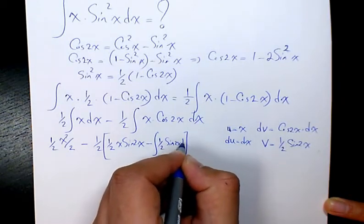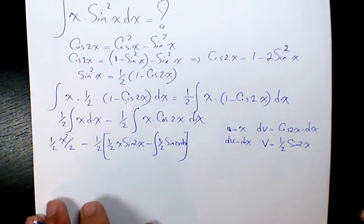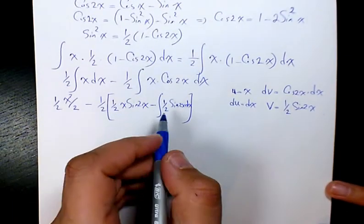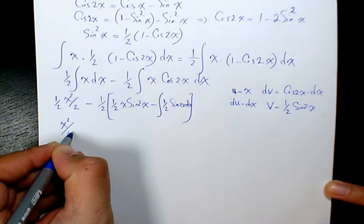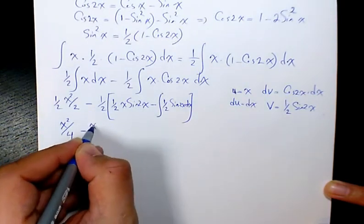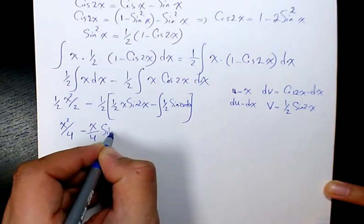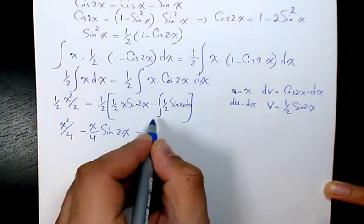So after that I'm going to arrange it. It's going to be x squared over 4. Here I will have negative x over 4 sine 2x, and then negative times negative positive, 1 over 2 times 1 over 2 is going to be 1 over 4 integration of sine 2x dx.